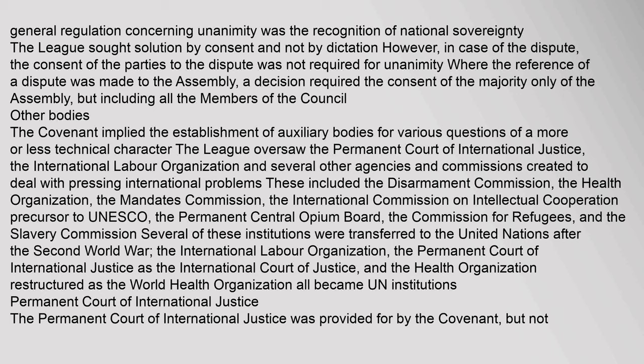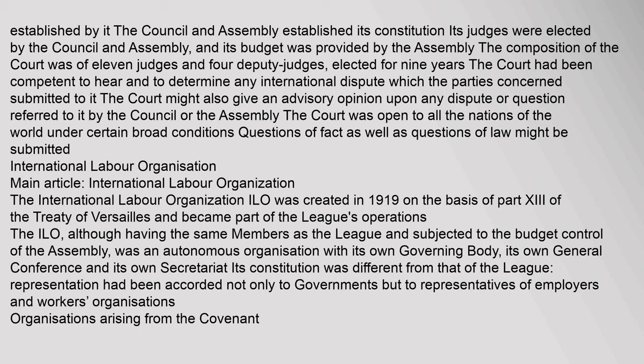The Permanent Court of International Justice was provided for by the Covenant but not established by it. The Council and Assembly established its constitution; its judges were elected by the Council and Assembly, and its budget was provided by the Assembly. The composition of the Court was of eleven judges and four deputy judges, elected for nine years. The Court was competent to hear and determine any international dispute which the parties submitted to it, and might also give an advisory opinion upon any dispute or question referred to it by the Council or the Assembly.